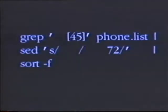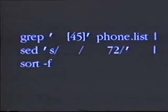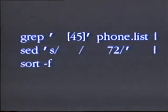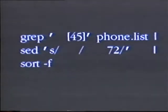Once you've created a pipeline, you can extend it quite easily. Let's suppose you want to sort those people whose phone numbers are going to change by last name. In this case, you take the grep command, pipe it to the sed command to add the prefix on the phone number, and pipe that to the sort command with the dash-f option, so you can now sort the list by last name.